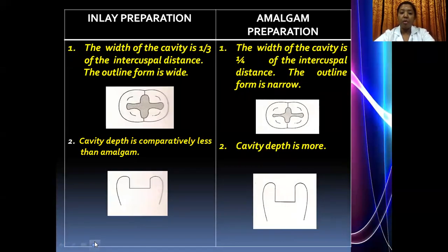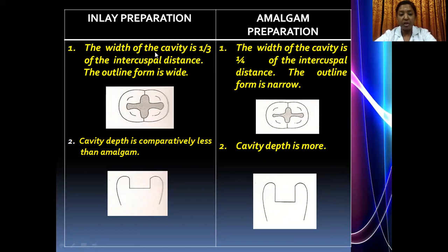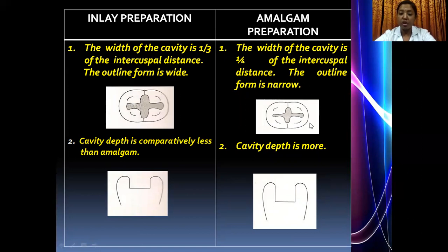Now let us see in detail the differences between inlay and amalgam cavity preparation. The first difference is the width of the cavity. For an inlay, the width is one-third of the intercuspal distance, so the outline form is relatively wide. For an amalgam, the width is one-fourth of the intercuspal distance, so the outline form is narrow.